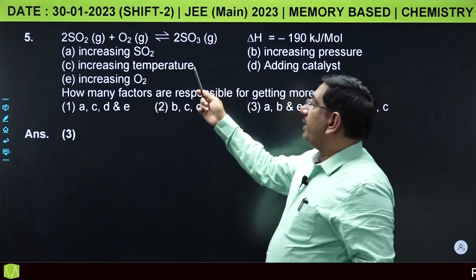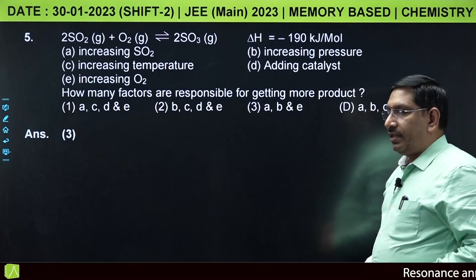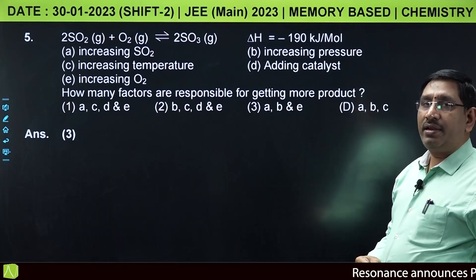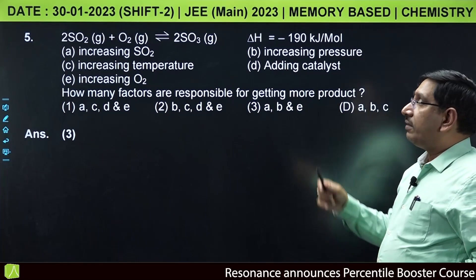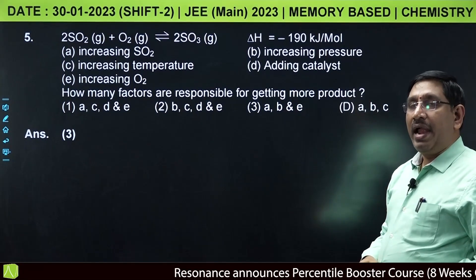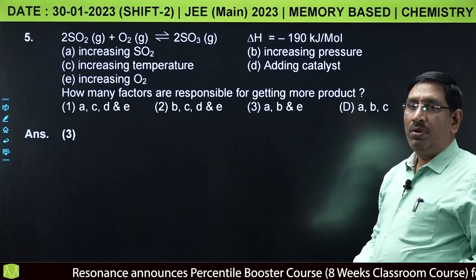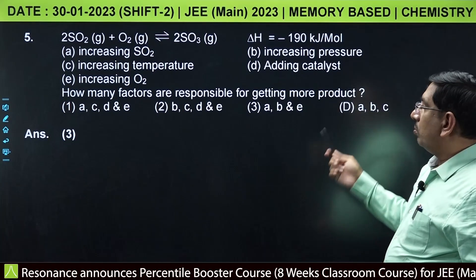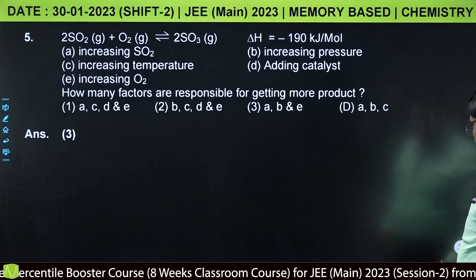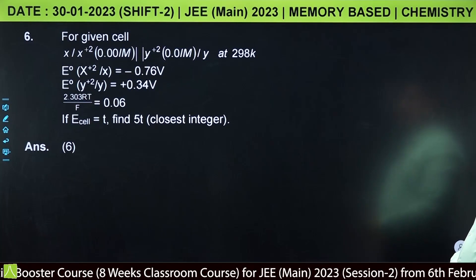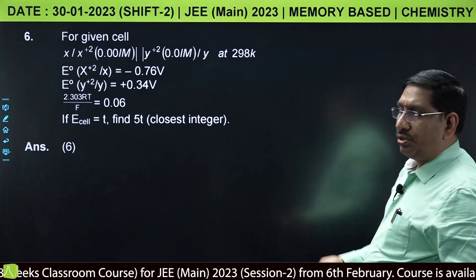Adding catalyst will increase the rate of reaction, meaning equilibrium will be attained quickly. Forward and backward reactions will both proceed at equal rates. So the suitable answer from the given options is A, B, and E.